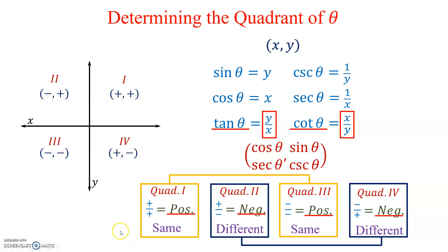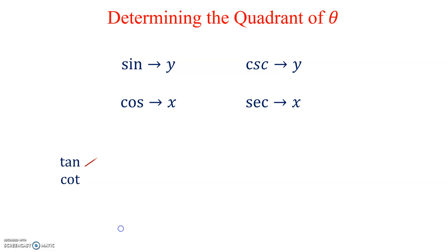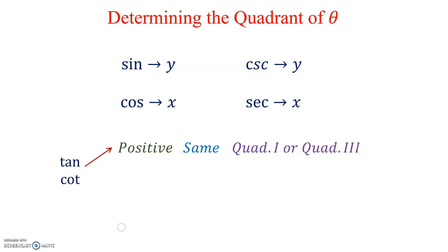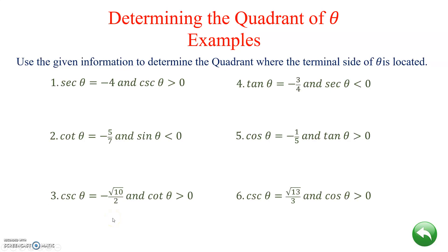Putting this all together: sine and cosecant are associated with the y-coordinate; cosine and secant are associated with the x-coordinate. For tangent and cotangent: if they are positive the signs are the same, placing theta in quadrant 1 or quadrant 3; if they are negative the signs are different, placing theta in quadrant 2 or quadrant 4. This is the resource we'll use to determine which quadrant theta is located in.